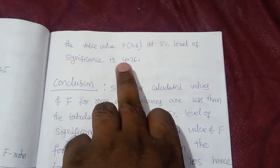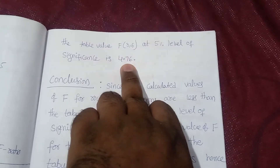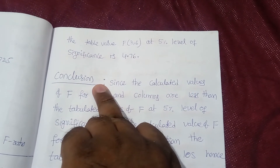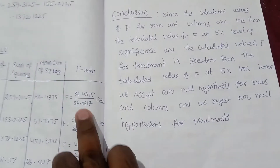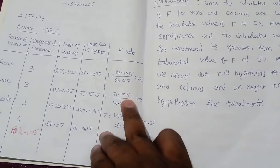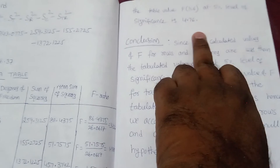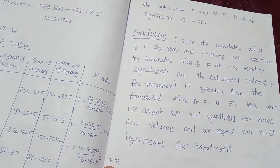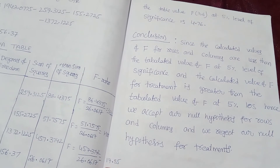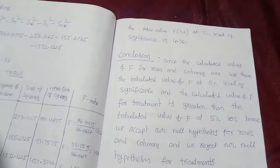The table value is: F(3, 6) at 5% level of significance = 4.76. Comparing: rows calculated F = 3.32 < 4.76, columns calculated F = 1.98 < 4.76, so we accept H₀ for rows and columns. But for treatments, calculated F = 17.55 > 4.76, so we reject H₀ for treatments.